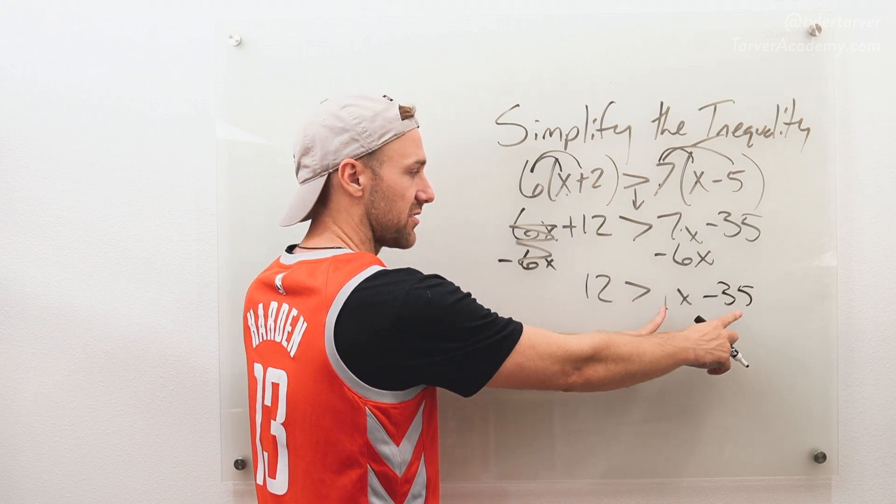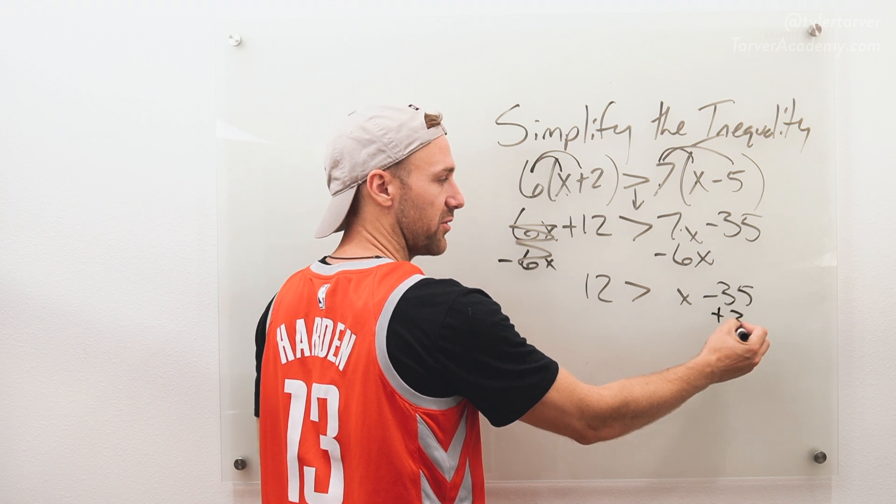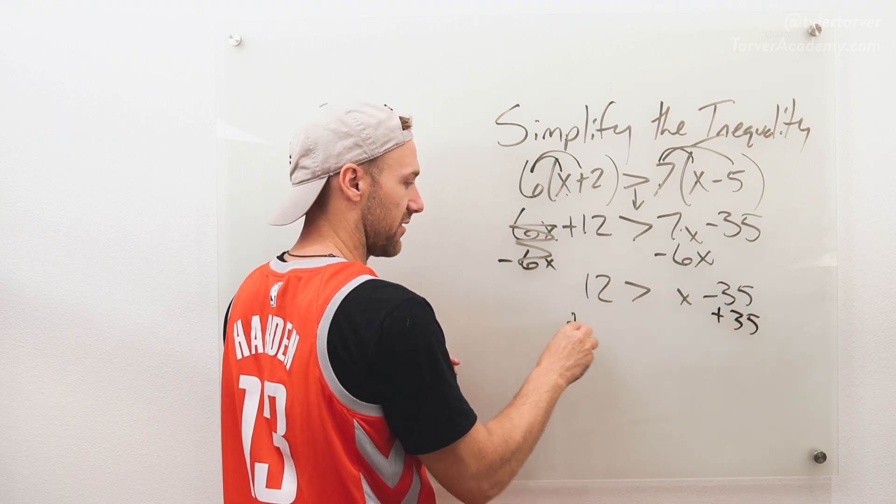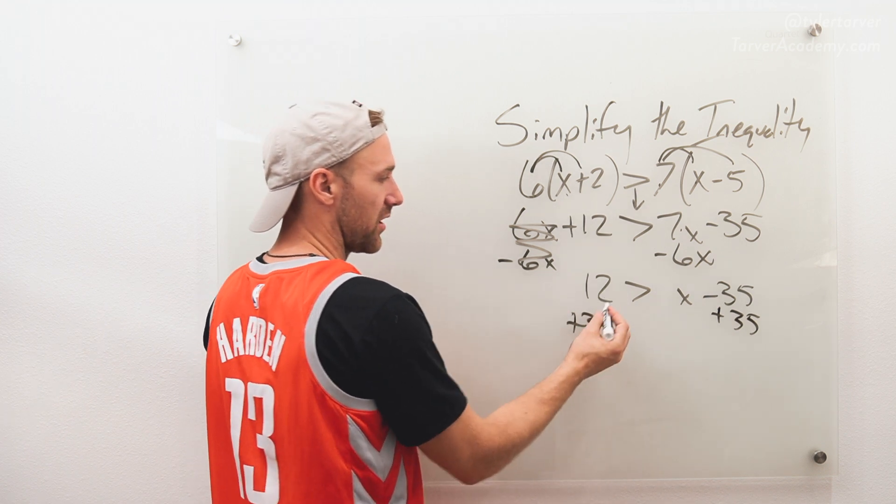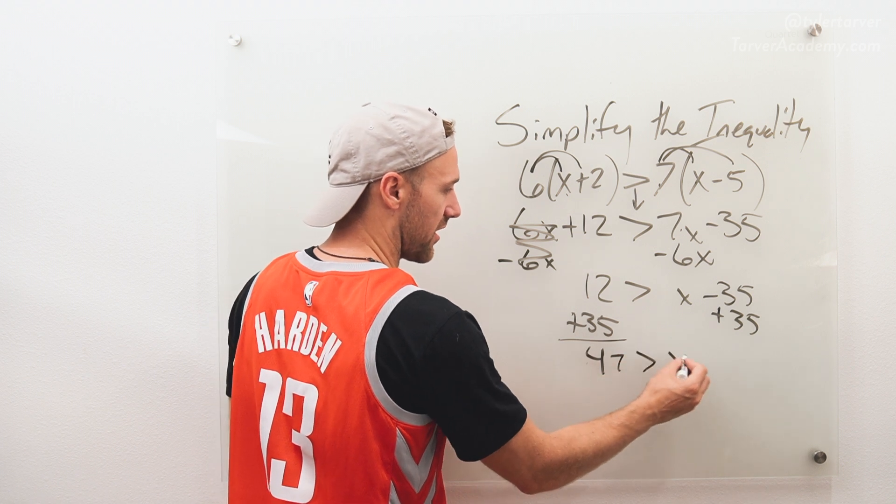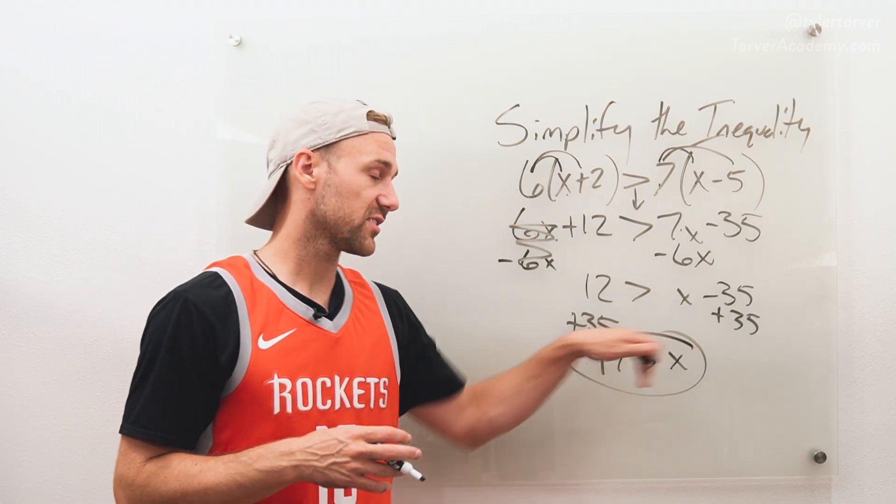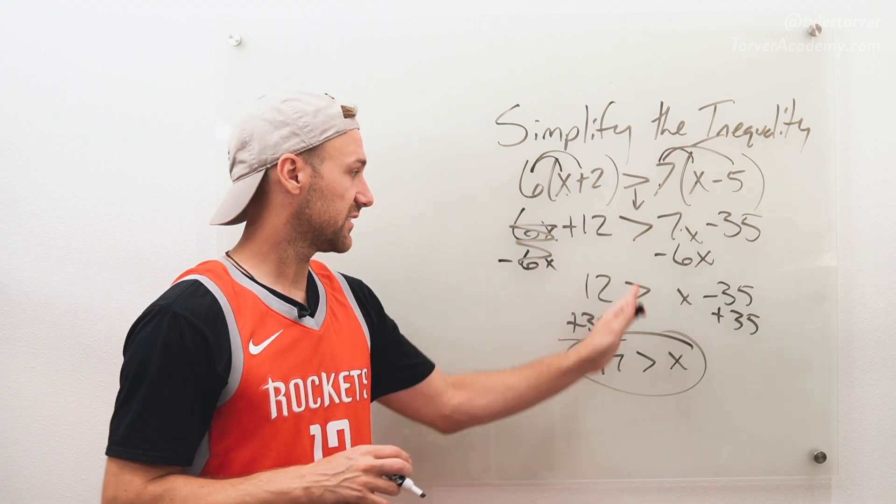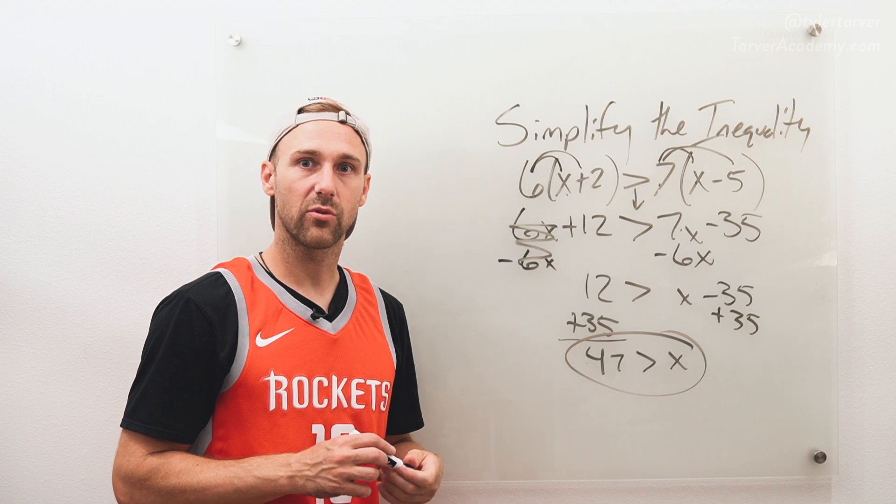Now I got to get my numbers over here. So I'm gonna do the opposite of minusing thirty-five, which is adding thirty-five. My marker lid came off. Okay, twelve plus thirty-five is forty-seven is greater than x. We didn't have to multiply or divide a negative across the sign, so we didn't flip it. It stayed the same all the way down. Forty-seven is greater than x.